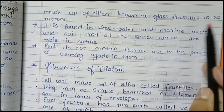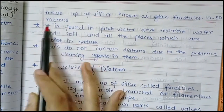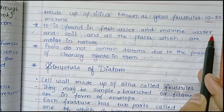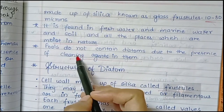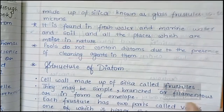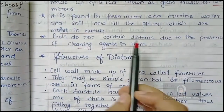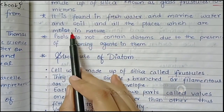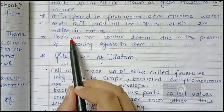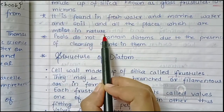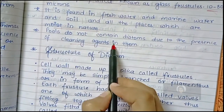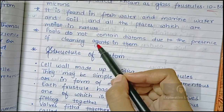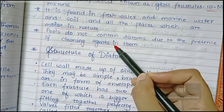The frustule cell wall is made up of silica. The size of the frustule may range from 10 to 80 microns. Diatoms are mostly found in fresh water and marine water. They can also be present in soil, but the place where they are found should be moist in nature. They are not found in dry places, and pools do not contain diatoms because cleaning agents such as chlorine are added by pool management.